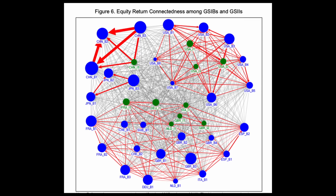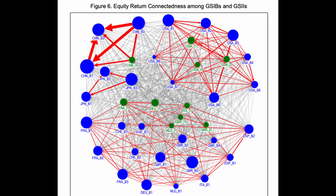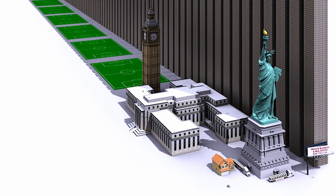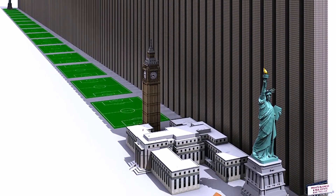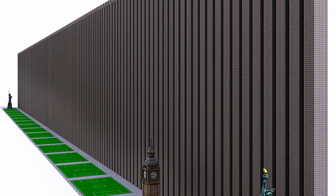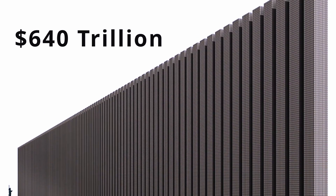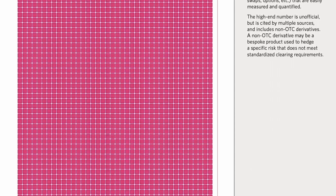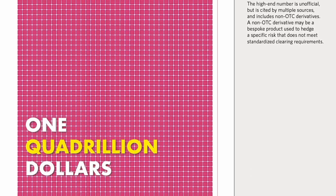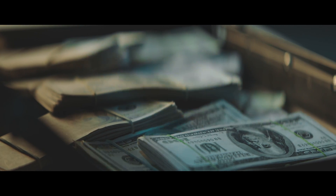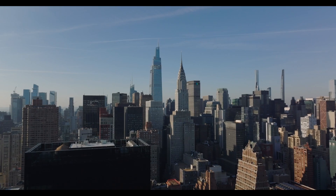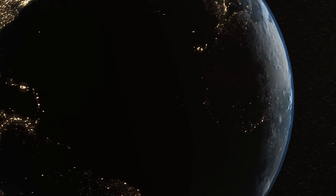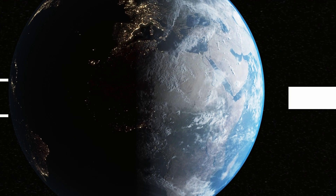The modern financial system is effectively a massive network of institutions tied to each other through these complex derivative contracts. GSIBs — Globally Systemically Important Banks — are the largest entities in the system. The derivatives market is gargantuan. The Bank of International Settlements estimated the total notional value of all outstanding OTC derivatives to be $640 trillion in 2019, and this figure doesn't even include exchange-listed derivatives. More sober estimates put it somewhere north of $1 quadrillion — equivalent to a million billion, or a thousand trillion. For reference, the US economy is around $22 trillion and the world economy is estimated at $88 trillion. Global GDP could fit into the notional derivatives market 11 times over and still not reach it.